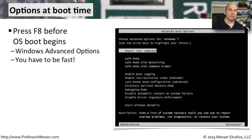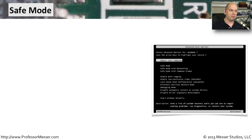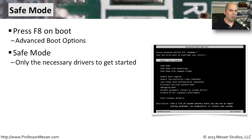A number of operating system troubleshooting tools are available before you even start the operating system. If you press F8 while your operating system is loading, you'll get the Advanced Boot Options menu. You can see a lot of different options here — run things in Safe Mode, run the Windows Recovery Console, or go back to the last known good configuration — all before your Windows operating system even starts. Once you choose the Advanced Boot Options, you can start in Safe Mode, which gives you only the necessary drivers to get Windows running.